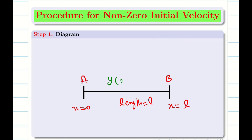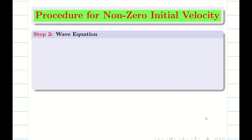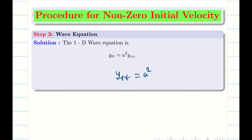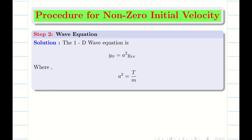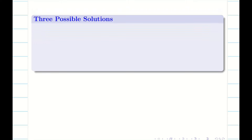The displacement is y(x, t). I can write the conditions — at both ends, the displacement is 0. Step 1 is done. Step 2: we are going to write the 1D wave equation. That is y_tt = a² y_xx, where a² = T/m, T is the tension and m is the mass per unit length.